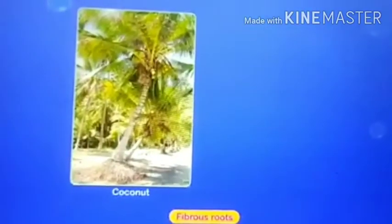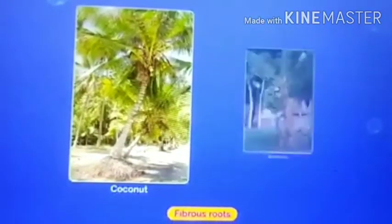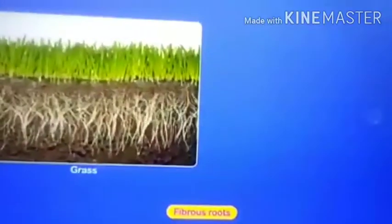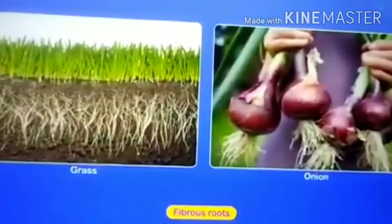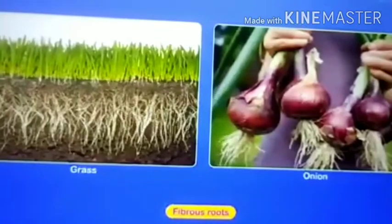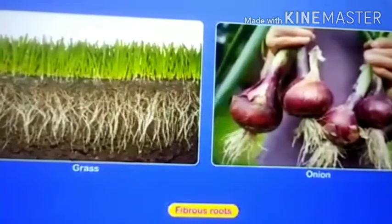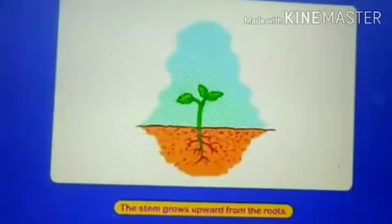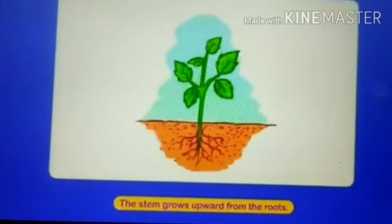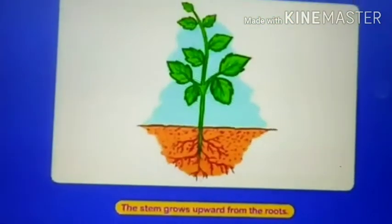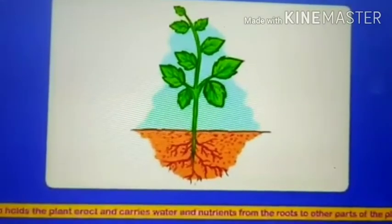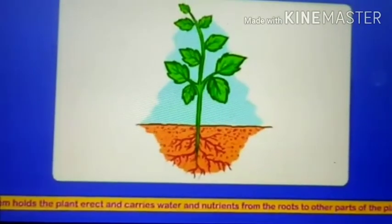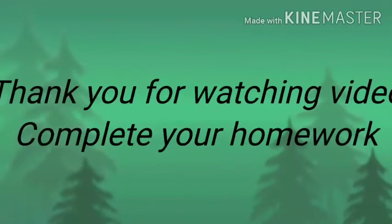Coconut, banana, grass, and onion have fibrous roots. The stem grows upward from the roots. The stem holds the plant upright.